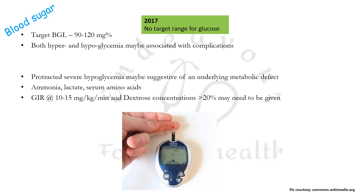Protracted severe hypoglycemia may be suggestive of an underlying metabolic defect, and in these cases additional testing should be done for ammonia, lactate, and serum amino acids. Glucose infusion at a rate of 10 to 15 mg per kg per minute and dextrose concentrations of even more than 20% may need to be given in these patients.